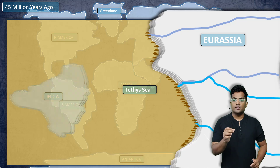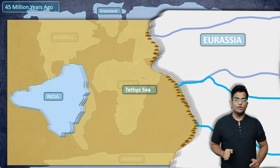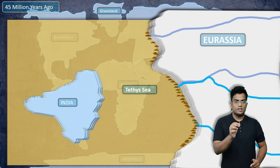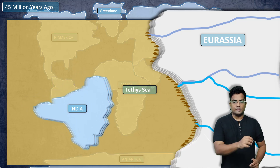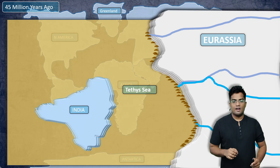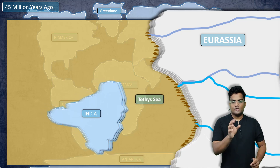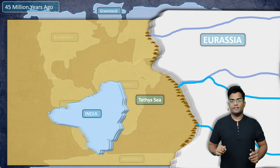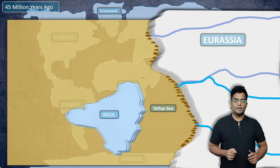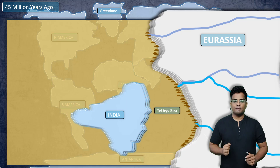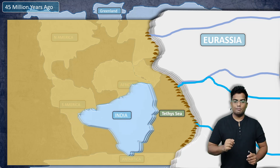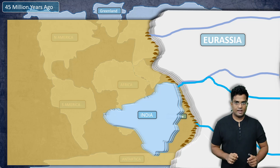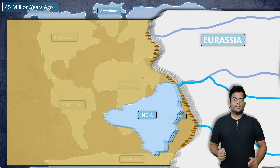Now we have the Indian Plate inching closer towards Eurasia. As it moves closer, the Tethys Sea is getting compressed. The Indian Plate continues moving and has almost reached parts of Eurasia, closing the Tethys Sea.